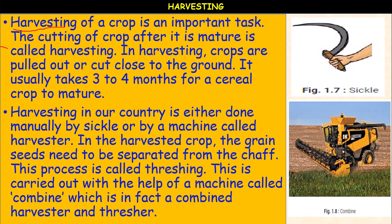Several hundreds of acres of land can be harvested at a time by using the combine machine. Threshing can be done manually by making oxen or bulls trample over the cut crop, or it can be done by a machine called a thresher. After threshing, the grain has to be separated from the chaff. The chaff includes dust, husk, etc. This can be done manually with the help of wind, and it is called winnowing.